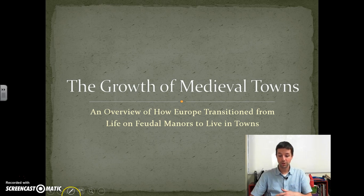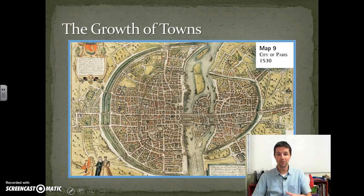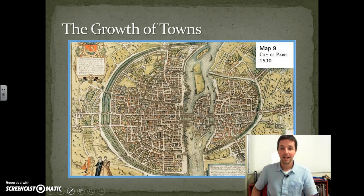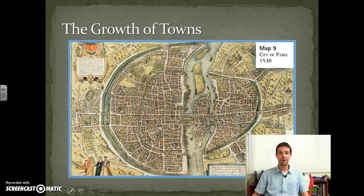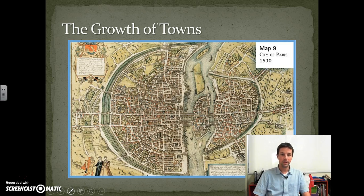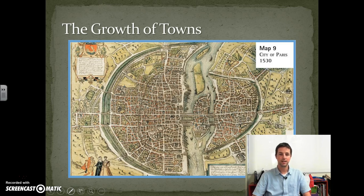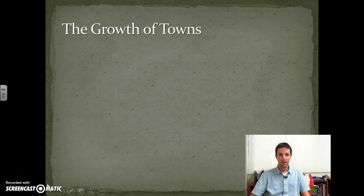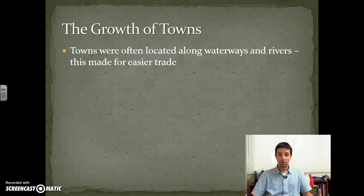Here we have one of my favorite images of the city of Paris in 1530. Paris started off as a feudal manor and grew into a town. I love this image — you can see the inner layer of walls as well as the outer layer with a moat that also had a wall, showing the organic growth of towns and how they look very different from the planned cities we know today. If you look at Google Maps, Paris still has that same circular shape.